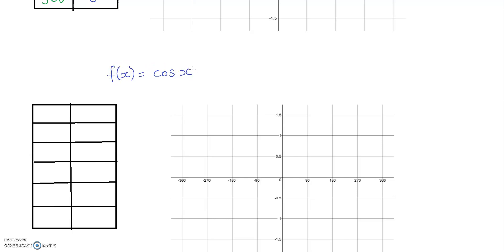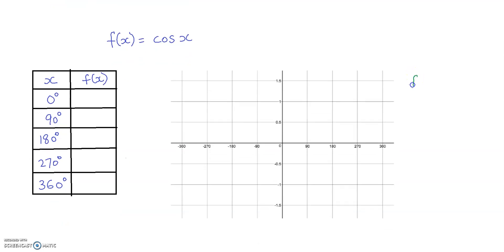I'll label the columns in the new table: the first column is x and the second is f of x. I'll use the same x values: 0, 90, 180, 270, and 360 degrees. Substituting into cosine: cos 0 gives 1, cos 90 gives 0, cos 180 gives negative 1, cos 270 gives 0, and cos 360 gives 1. You can use your scientific calculator to verify these.